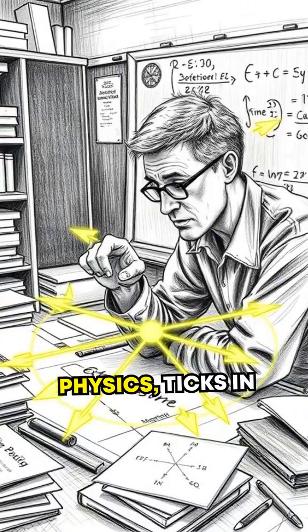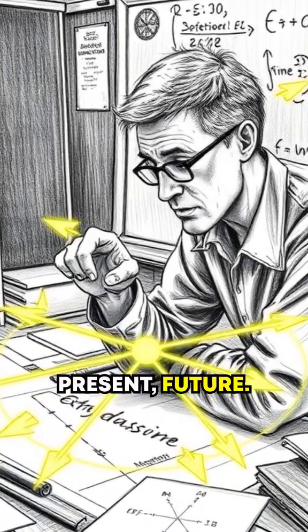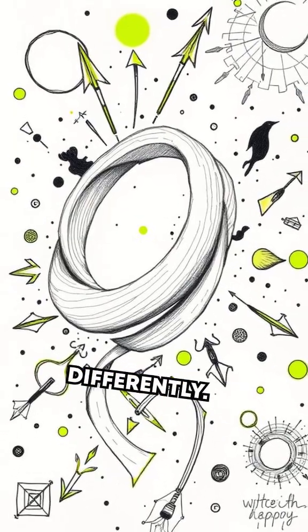Time, in classical physics, ticks in neat order—past, present, future. But quantum mechanics suggests time could behave very differently.